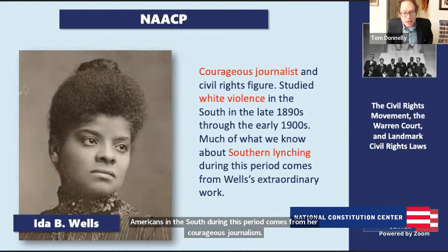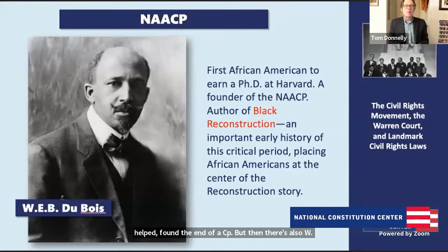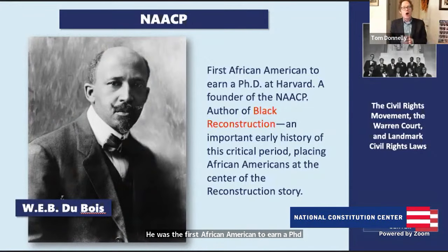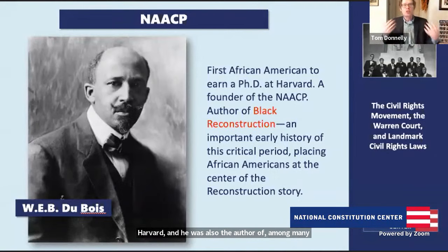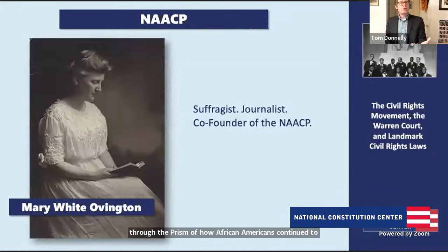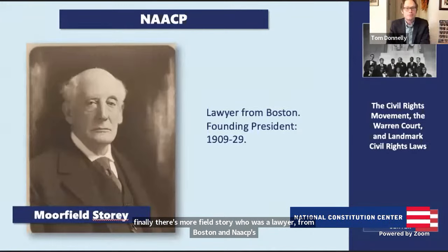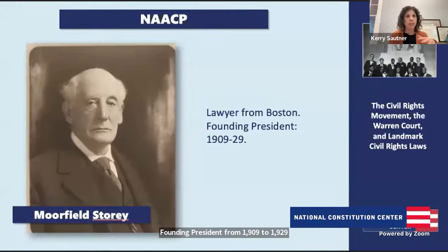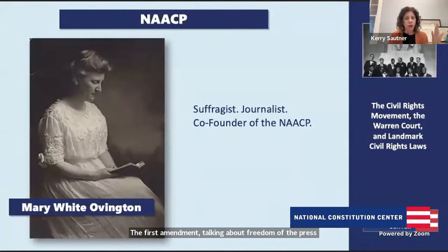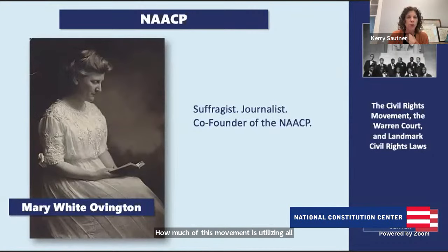There's also W.E.B. Du Bois, one of the great public intellectuals in American history — the first African American to earn a PhD at Harvard, and author of the amazing book Black Reconstruction. A couple of other key figures: Mary White Ovington, a suffragist, journalist, and co-founder of the NAACP; and Moorfield Storey, a lawyer from Boston and the NAACP's founding president from 1909 to 1929. I want to pull out the First Amendment here — freedom of the press with Ida B. Wells and Mary White Ovington as writers. How much of this movement utilized all different parts of the First Amendment.